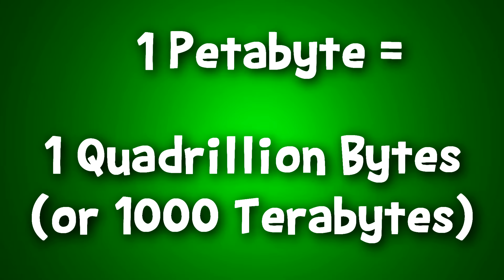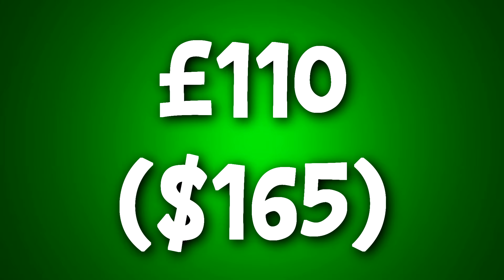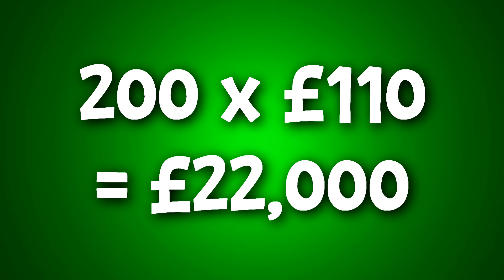Let's start off with the smallest and simplest. A petabyte is one quadrillion bytes, or alternatively one thousand terabytes. The average price of a five terabyte hard disk drive is around £110, which will be our reference for this video. You will need two hundred five-terabyte hard drives in an array to create one petabyte, so the cost would be around £22,000.